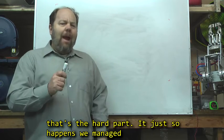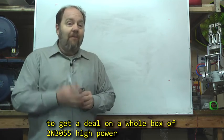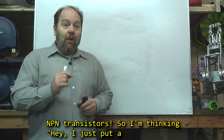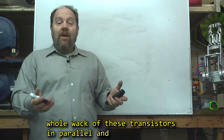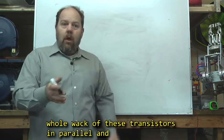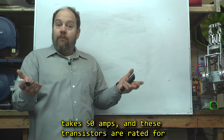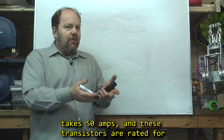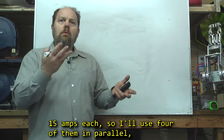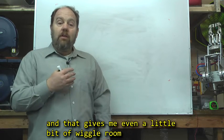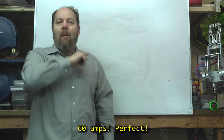It just so happens we managed to get a deal on a whole box of 2N3055 high power NPN transistors. So I'm thinking, hey, I just put a whole whack of these transistors in parallel, drive them all from the pulse width modulation circuit, the motor takes 50 amps, these transistors are each rated for 15 amps, so I'll use four of them in parallel, and that gives me even a little bit of wiggle room because I should be able to handle 60 amps. Perfect!